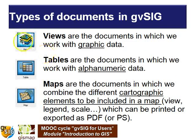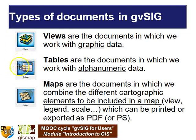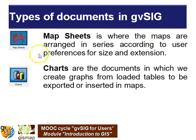Let's see some more details about documents in GVSIG. Views are documents in which we work with graphic data. Tables are documents in which we work with alphanumeric data and information. Maps are documents in which we combine the different geographic elements to be included in the map — the view, the legend, the scale — which can be printed or exported as PDF or PS. Map sheets is a plugin where maps are arranged in series according to user preferences for size and extension. Charts are documents in which we create graphs from loaded tables to be exported or inserted in maps.